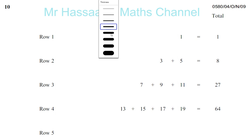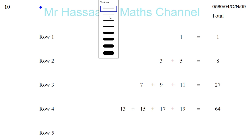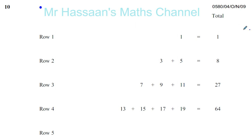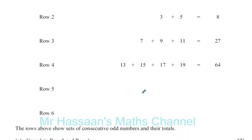Here we have rows of numbers. Row 1 consists of the number 1, then row 2 is 3 plus 5 which is 8, then row 3 is 7 plus 9 plus 11, and row 4 is 13 plus 15 plus 17 plus 19 and so on. Row 5 and 6 are blank. The rows above show sets of consecutive odd numbers and their totals. Complete row 5 and 6.